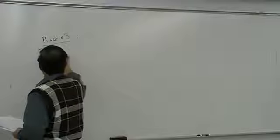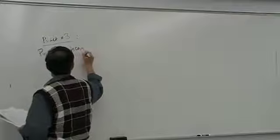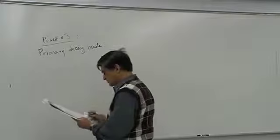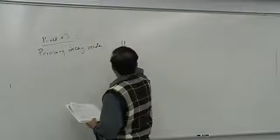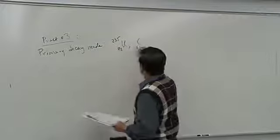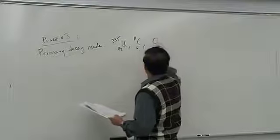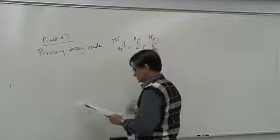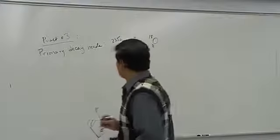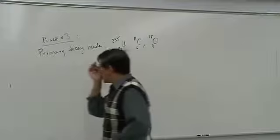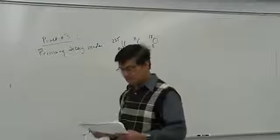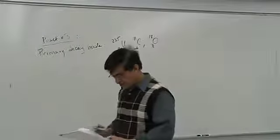Practice problem 3: predict the primary decay mode for uranium-92-235, carbon-6-11, and oxygen-8-18. These are already radioactive substances. We want to determine what kind of decay each would predominantly undergo.